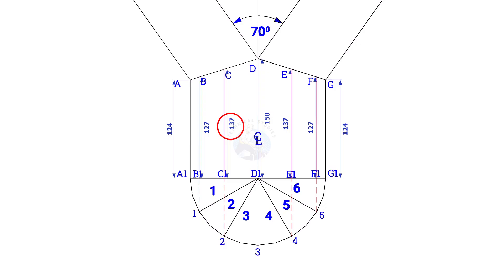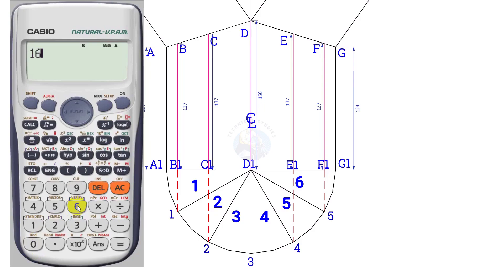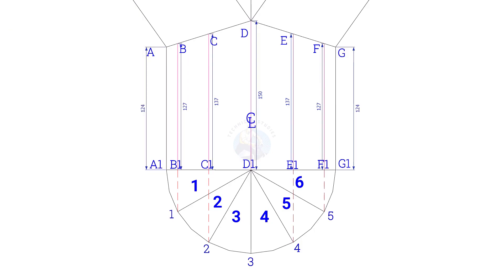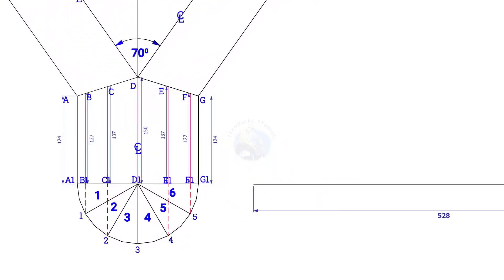Now, calculate the circumference of the pipe. Multiply the pipe diameter by 3.14 or pi. Since the diameter of the pipe is 168, multiply it with 3.14. The circumference is nearly 528 millimeters, draw a 528 millimeter long line.